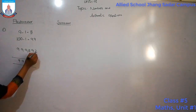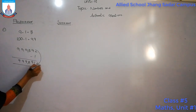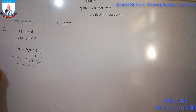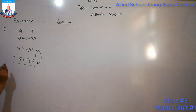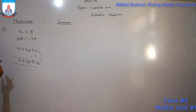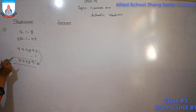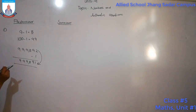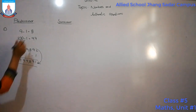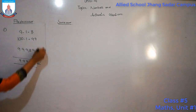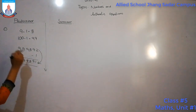Now, whether we have a larger number or a smaller number, to find the predecessor we have to subtract 1 from the given number.